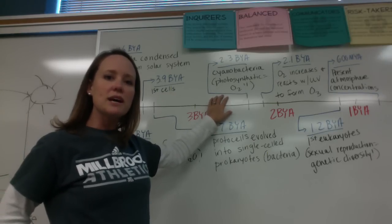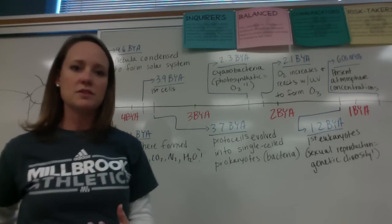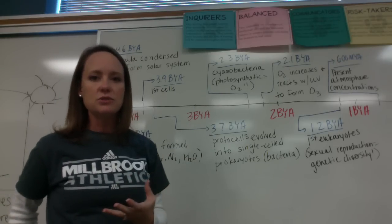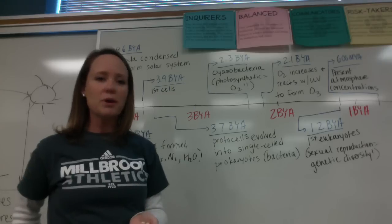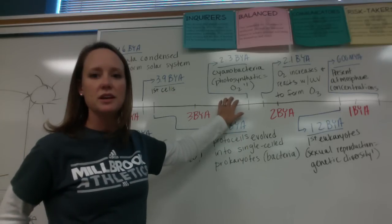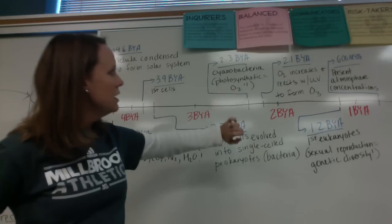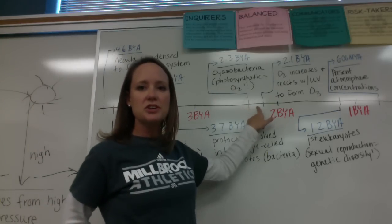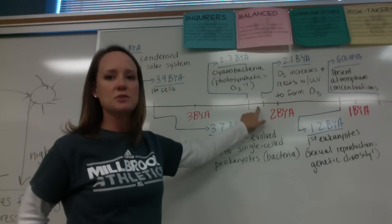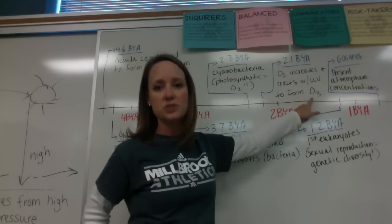The cyanobacteria took the carbon dioxide from the water — because we started having water on Earth at this point — converting it into glucose, and the byproduct was oxygen. So we started seeing oxygen in the water and in the atmosphere.